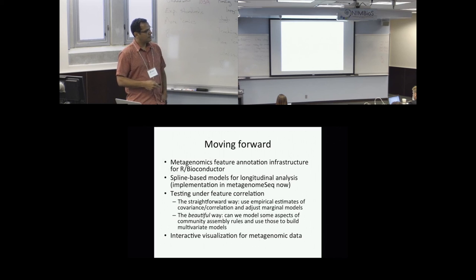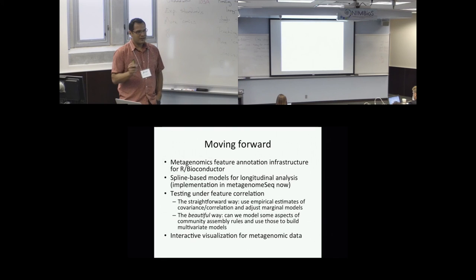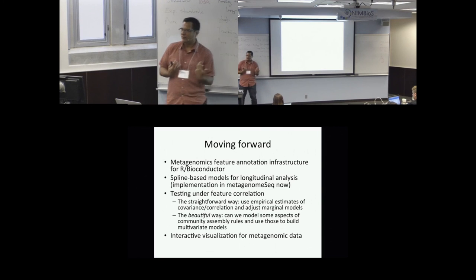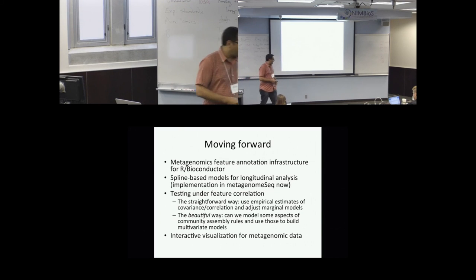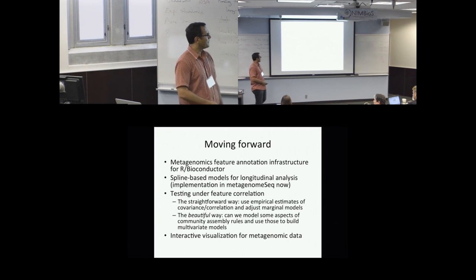So we want to do a little bit better when testing both marginal models under correlation, but also starting to think about testing in terms of community statistics. So a straightforward way is to use empirical estimates of covariance or correlation to adjust marginal models. And what I think is a beautiful but harder way is, can we model some aspects of community assembly rules? Where are things anti-correlated because they are exclusive in what kind of role they play in the community? Are things highly correlated because they are both serving the same role or not? I think we can try to model some community assembly rules and use those to build multivariate models.